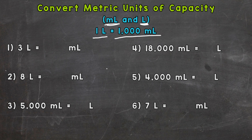Let's do some conversions. For number one, we have three liters equals how many milliliters. Well, if one liter equals a thousand milliliters and we have three of them, we need to do three times a thousand, which gives us three thousand. So three groups of a thousand milliliters equals three thousand milliliters.